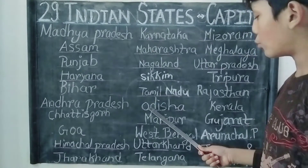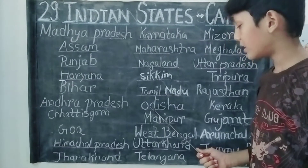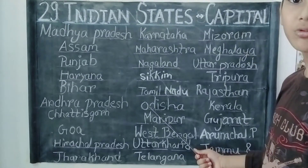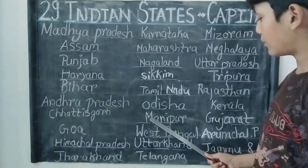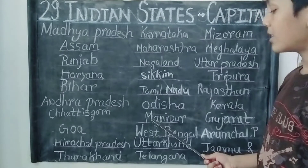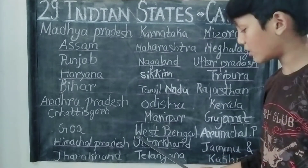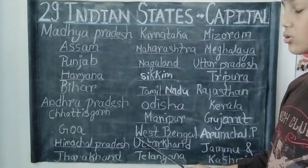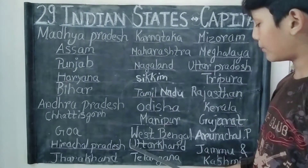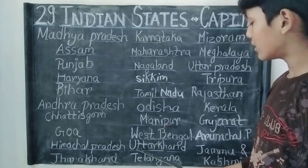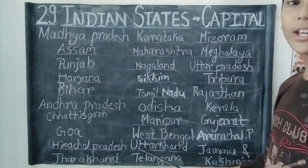The capital of Odisha is Bhumbeshwar. The capital of Manipur is Impal. The capital of West Bengal is Kolkata. The capital of Uttaragand is Dharadun.